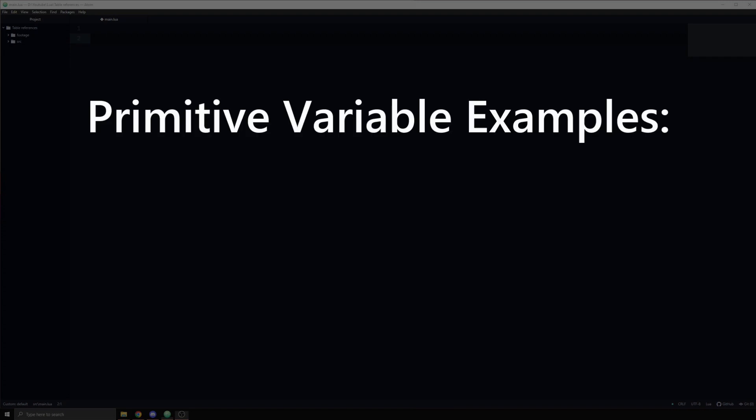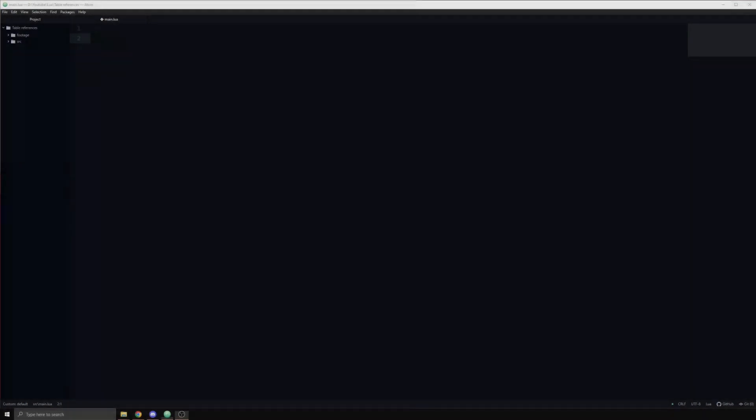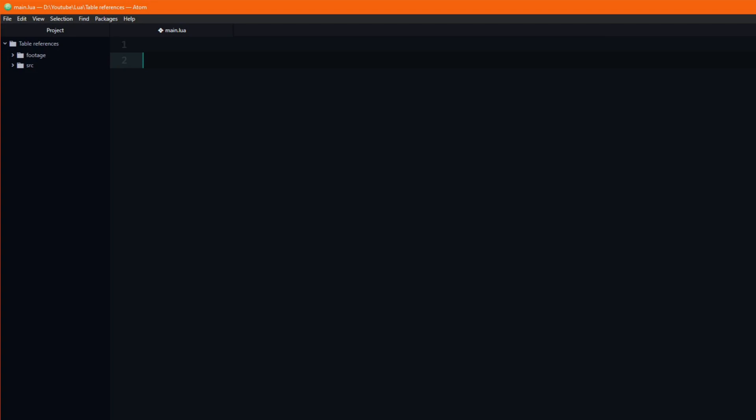Whenever you pass a variable which is a primitive variable, such as a string, number, or boolean, you don't pass the variable itself, but rather its value.